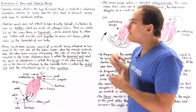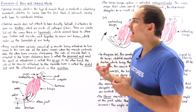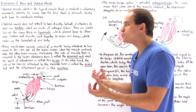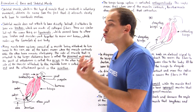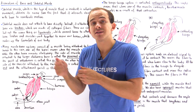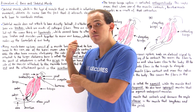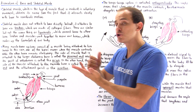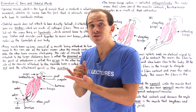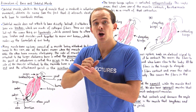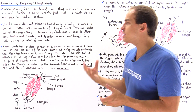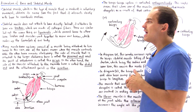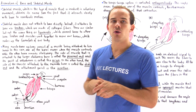Muscles by themselves do not actually create motion — muscles contract and cause the bones to move. It's the interaction between our nervous system, our bone system, and our skeletal muscle that creates the movement we are consciously in control of.